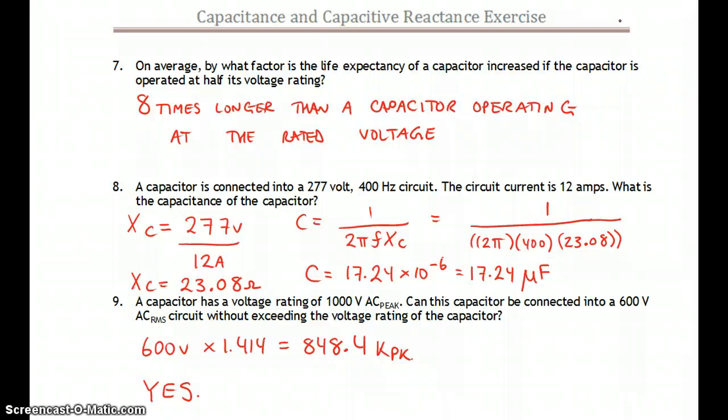Number eight. Capacitor is connected to 277 volts, 400 hertz. Circuit current is 12 amps. So be careful you don't get tripped up. This is 400 hertz. Find your Xc first.